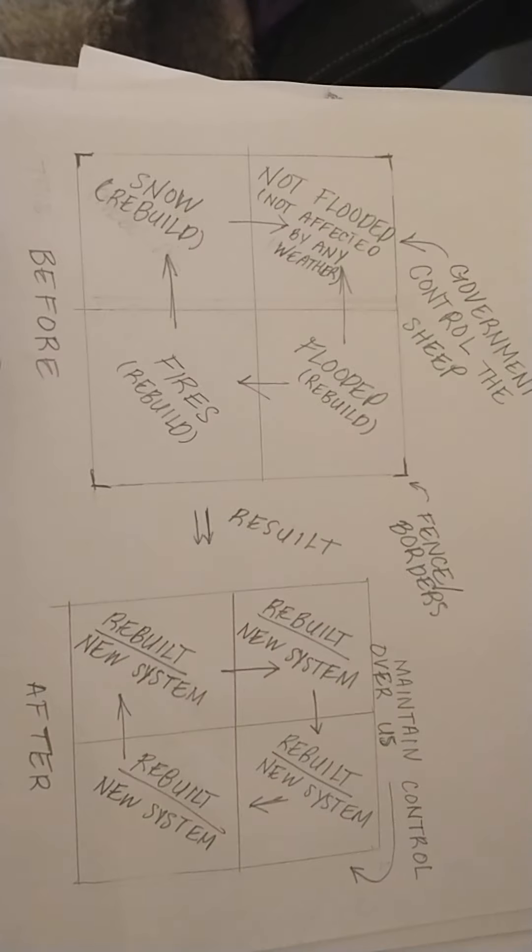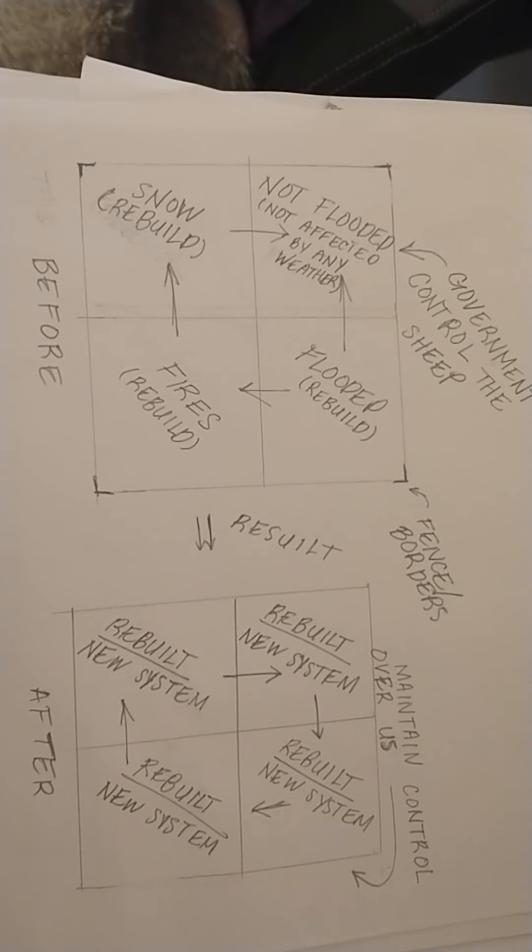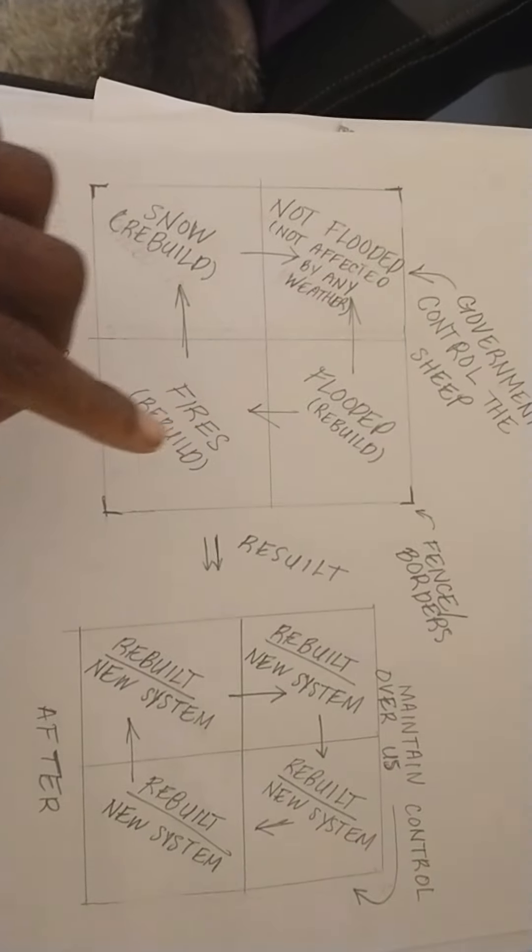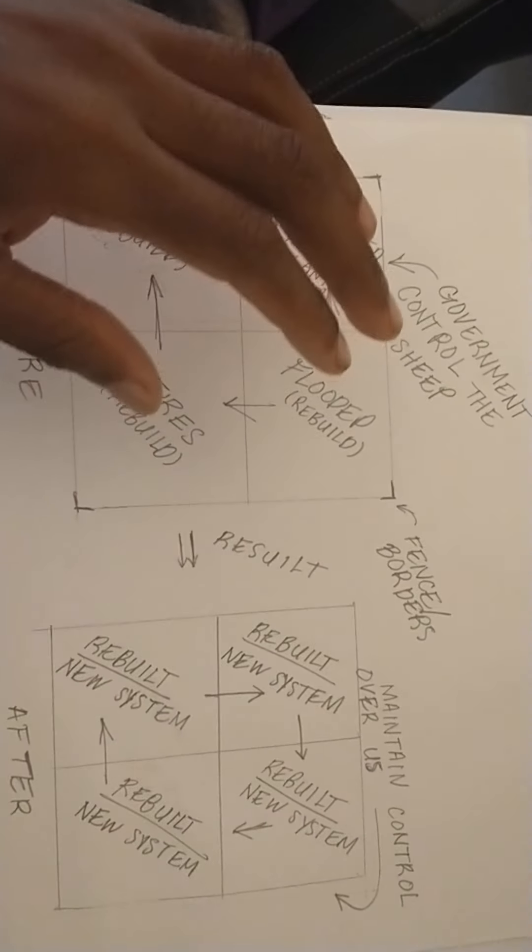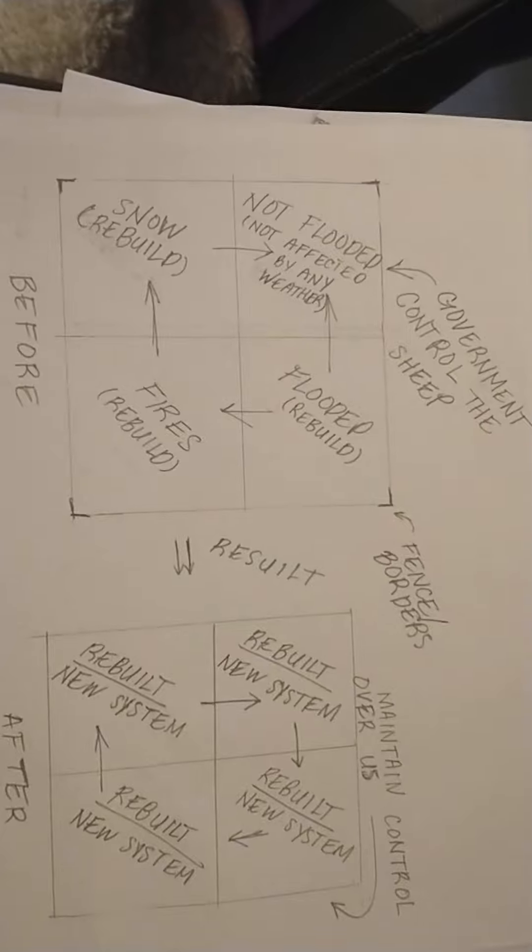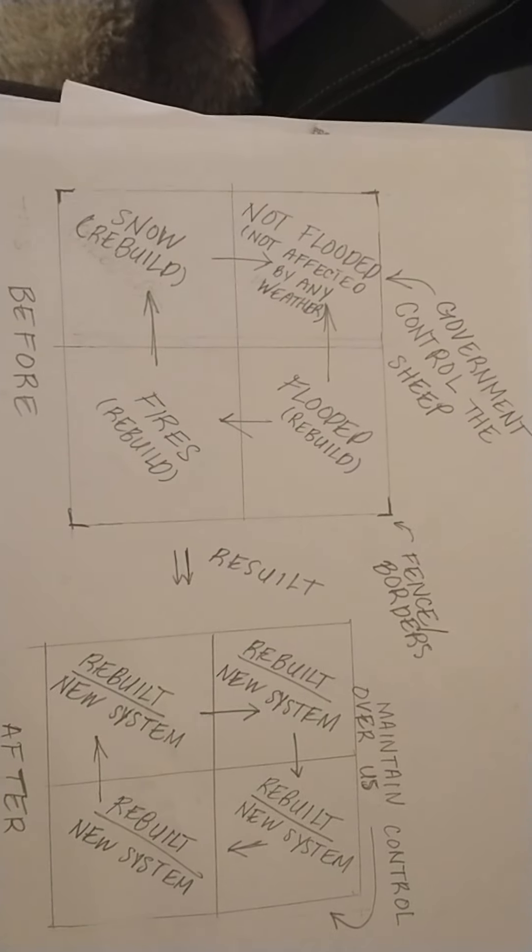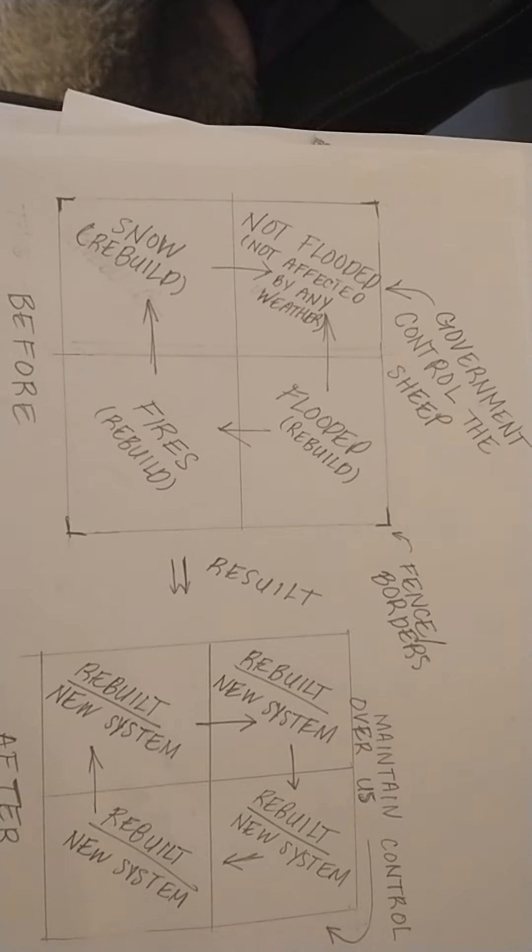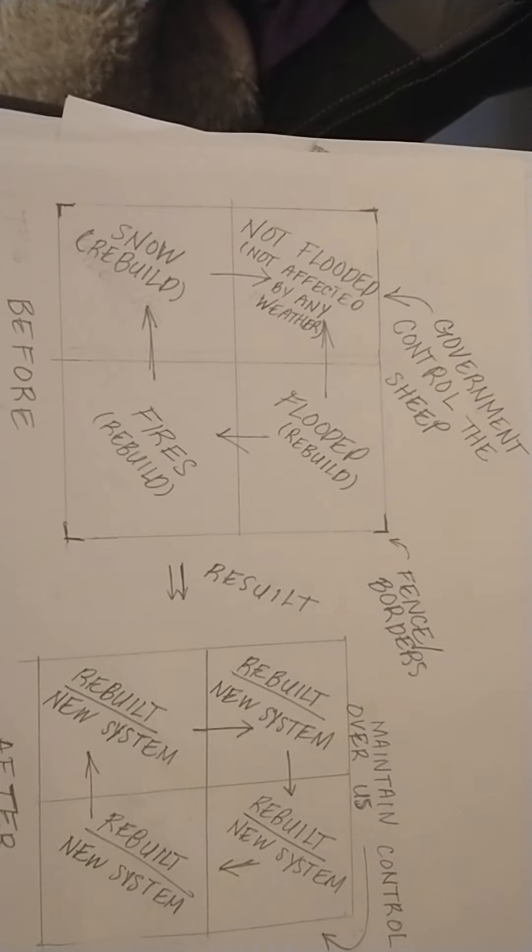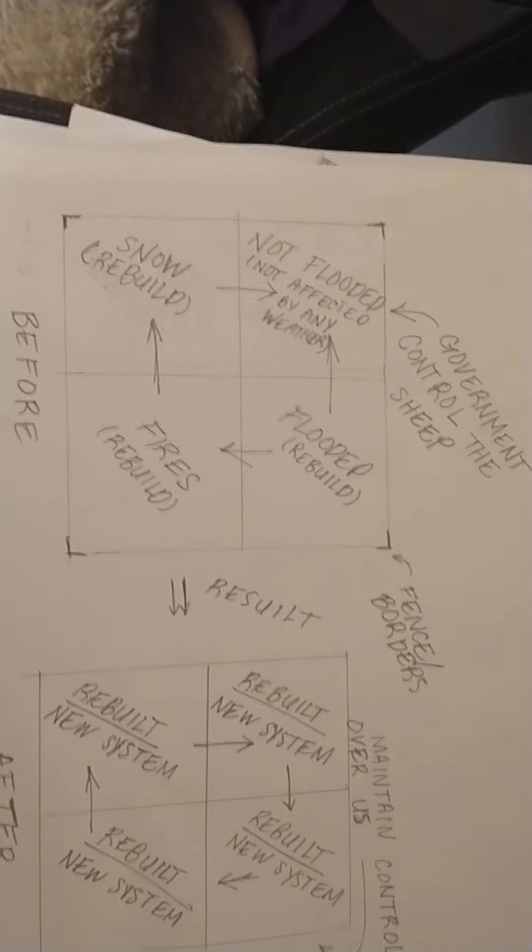So basically I have a before and an after. Now we about to look at the before part. The before part, you know these beings they have a weather system, they got a whole set of satellites and stuff like that that allows them to be able to manipulate the weather or what you would call weather.